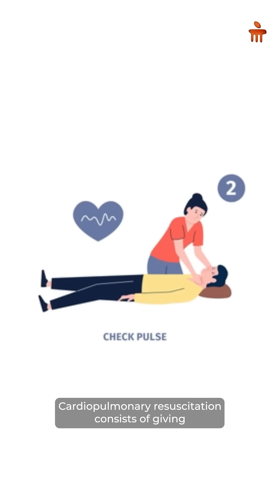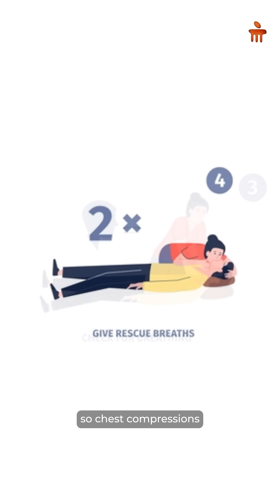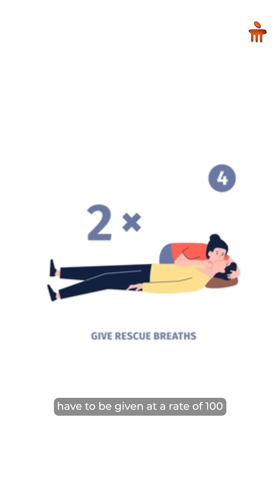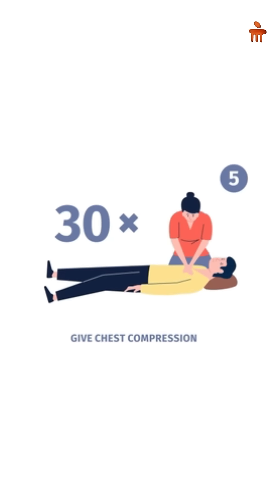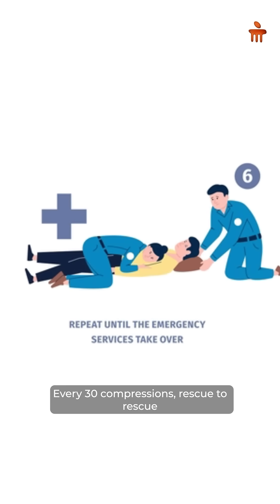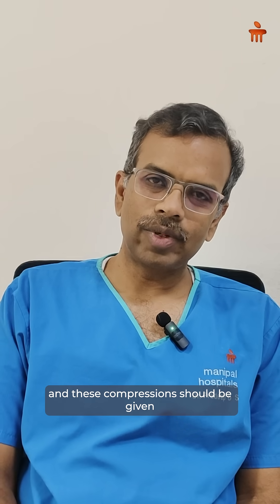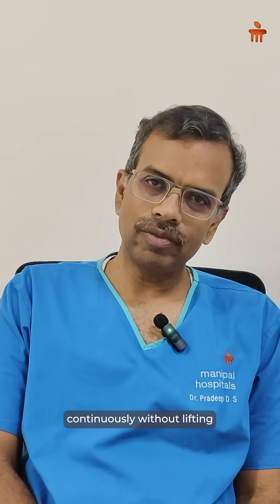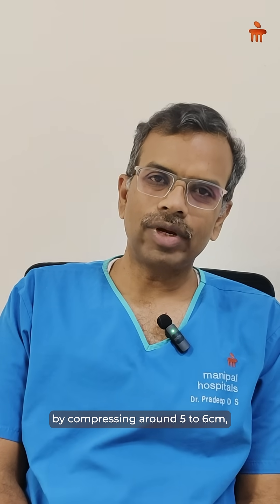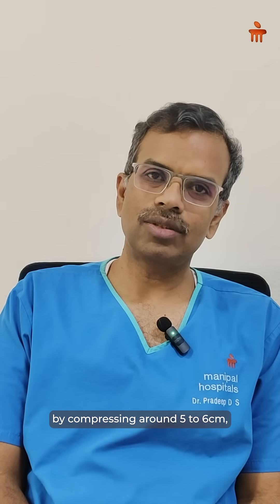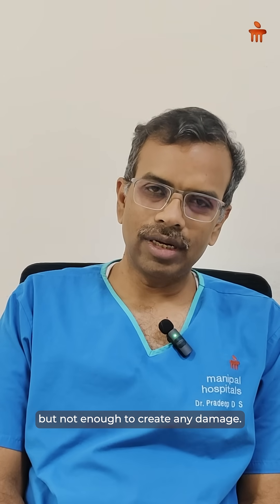Cardiopulmonary resuscitation consists of giving chest compressions and rescue breaths. Chest compressions have to be given at a rate of 100 to 120 per minute. Every 30 compressions, 2 rescue breaths are given, and these compressions should be given continuously without lifting your hand off the chest, compressing around 5 to 6 centimeters. It should be forceful enough but not enough to create any damage.